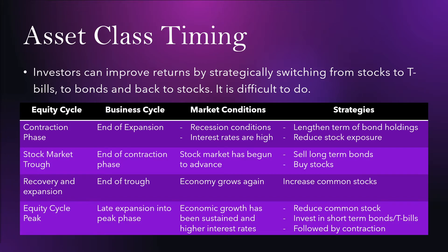The equity cycle peak is when you reach the peak of the expansion, which will typically be followed by the contraction phase. You will want to reduce common stock and invest in short-term bonds. Once the contraction phase begins again, sell those T-bills, lengthen the bond holdings, and reduce stock exposure. It is a cycle. Asset class timing is quite difficult to do, and while some managers do have some success with it, it is definitely difficult to time the market.